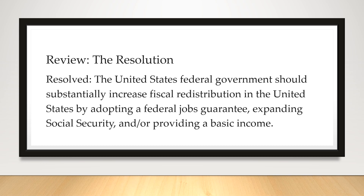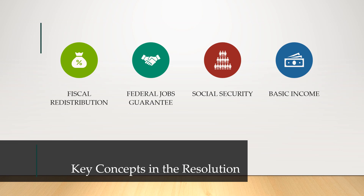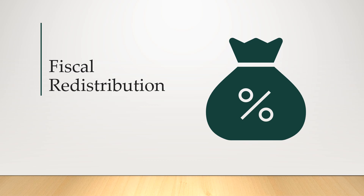To review from the first part — and if you haven't watched that, I would probably go watch that first — the resolution is: Resolved, the United States federal government should substantially increase fiscal redistribution in the United States by adopting a federal jobs guarantee, expanding Social Security, and/or providing a basic income. Breaking the resolution down, there are four key concepts: fiscal redistribution, a federal jobs guarantee, Social Security and expanding it, and providing a basic income. So let's start with fiscal redistribution.